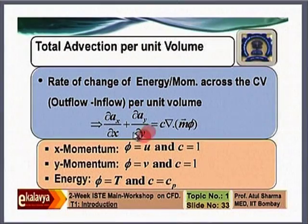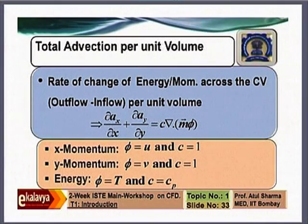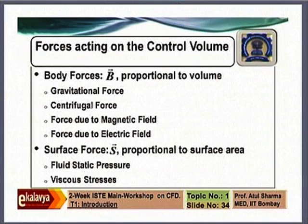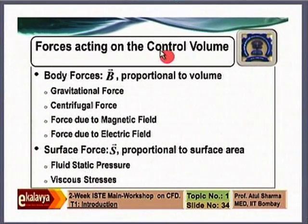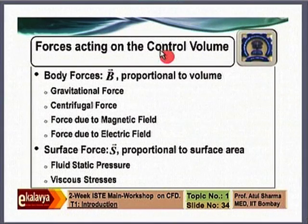For a general expression of advection flux, we use one constant C — which is 1 in case of momentum equation and specific heat in case of energy equation. When going to momentum and energy transport, there are two transport mechanisms: advective (already discussed) and diffusive. In momentum, diffusive transport involves forces; in heat transfer, diffusive transport involves conduction heat transfer.